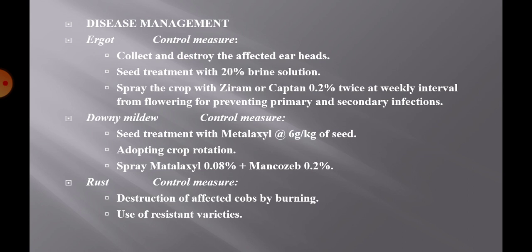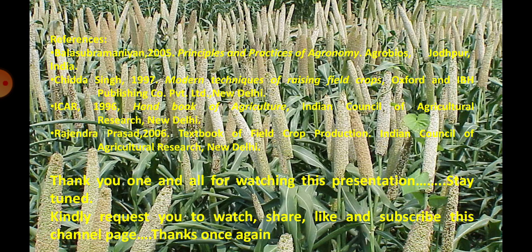Downy mildew causes chlorosis in the seedling stage, shortening of internodes, and the inflorescence of infected plants gets completely or partially transformed into leaf structure. To control downy mildew, treat seeds with metalaxyl at the rate of 6 grams per kg of seed, adopt crop rotations, and spray metalaxyl 0.08% plus mancozeb 0.2%. Rust becomes apparent at the time of grain setting; the pathogen infects florets and transforms them into large clumps of sori containing black spore mass. To control rust, destroy affected crops by burning and use resistant varieties.